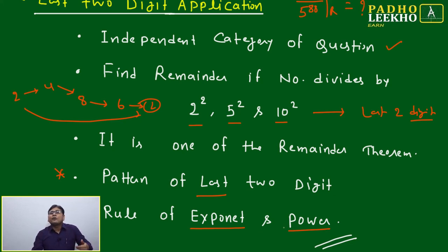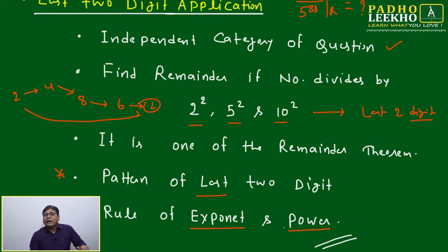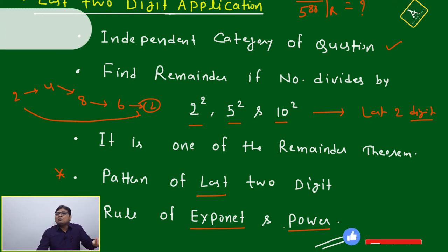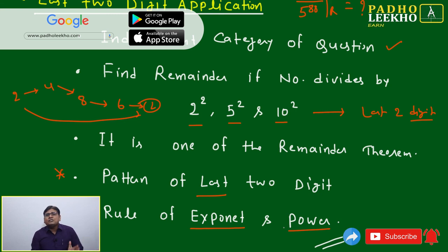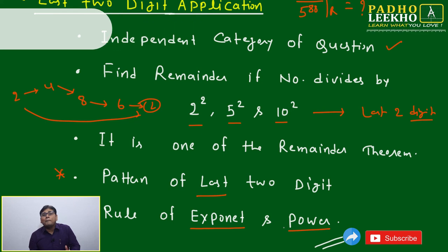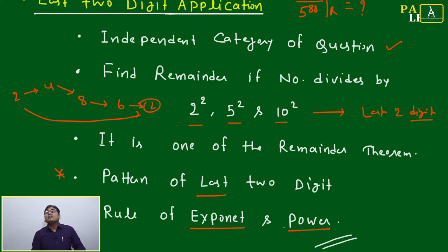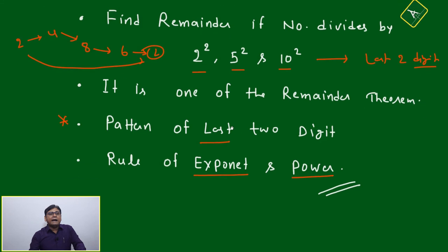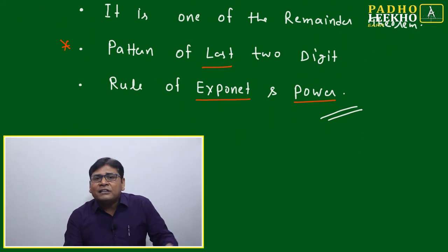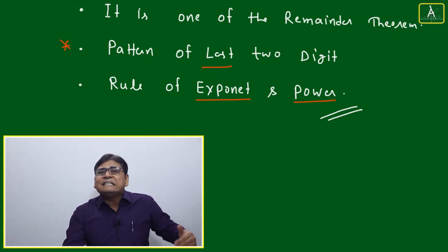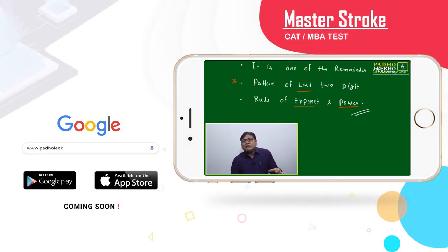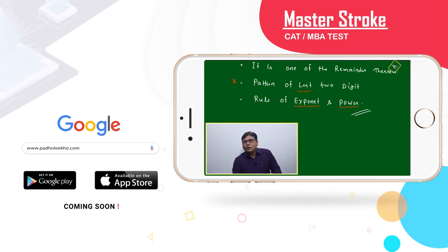If any number is raised to the power 0, it equals 1 — for example, 1 to the power 0, 2 to the power 0, or 9 to the power 0 all equal 1. But 0 to the power 0 is undefined, not 1, even though 0 is also a real number. This is one of the contradictions of mathematics — keep thinking and keep learning. For a deeper level of discussion related to CAT or mathematical aptitude, log into www.paroliko.com.